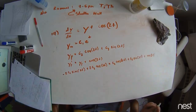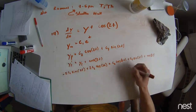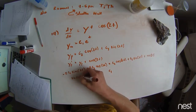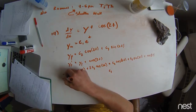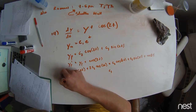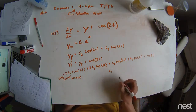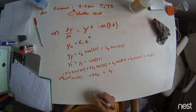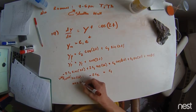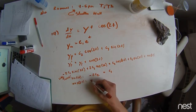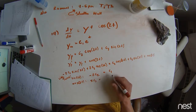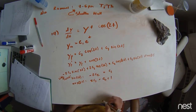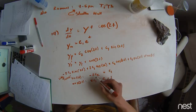Now we combine like terms. Everything connected to sine has to equal each other. So we have c3 and negative 2c2 — those are equal for the sine of 2t terms. And then for the cosine of 2t terms, we have 2c3 equals c2 plus 1. There's a 1 right there.